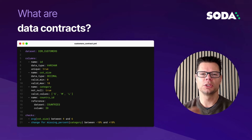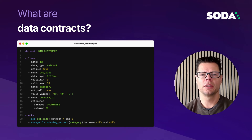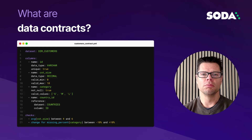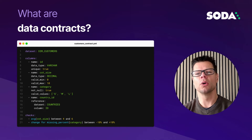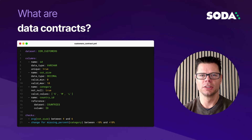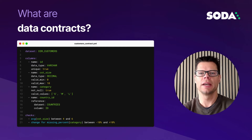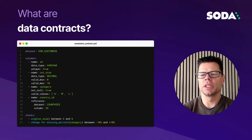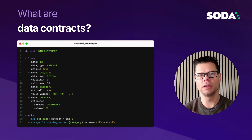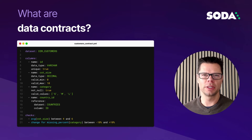Without a data contract in place, there's a tendency to build big spaghetti pipelines — monoliths that no one is able to take ownership of. Introducing data contracts enables breaking down those data monoliths into smaller pieces so that producers can take ownership. Every dataset that is a handover between teams deserves a data contract.